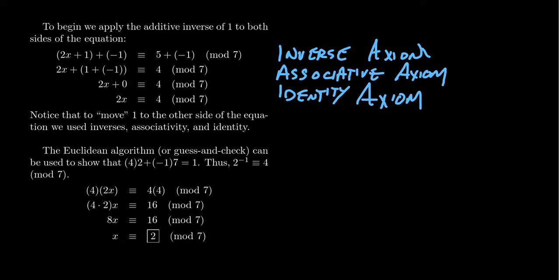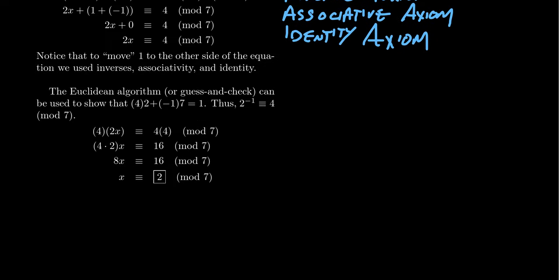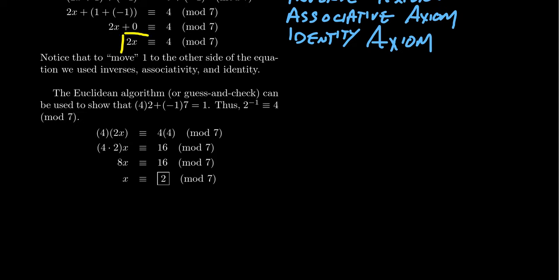Well, that gets rid of the plus 1. Well, how do you get rid of the 2x? So I should mention that we are able to move the plus 1 to this side because Z_n comma plus is a group. It is an abelian group, but we didn't actually need commutativity to make that work. You don't need that here. Now, how do we work with the situation we're in? Now we have this 2x is congruent to 4.